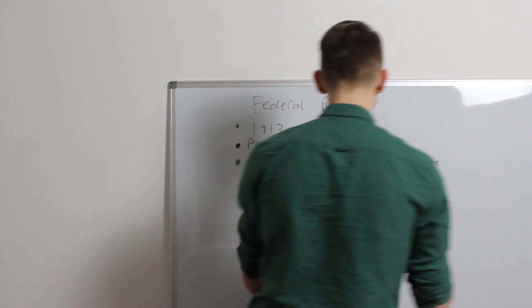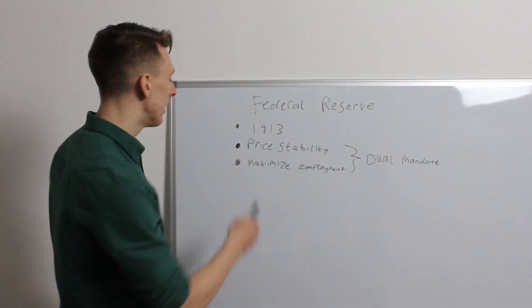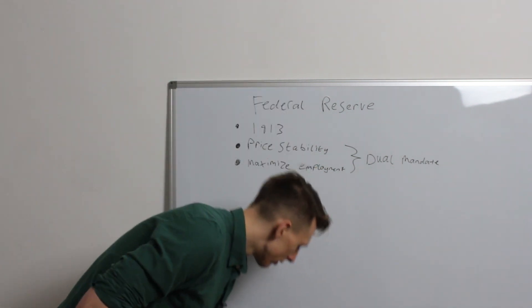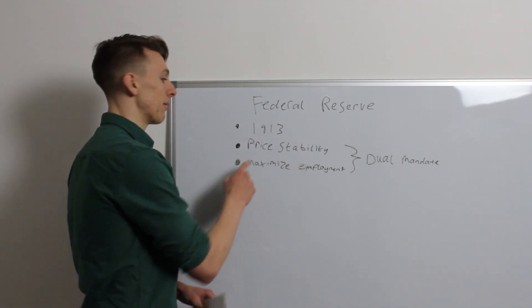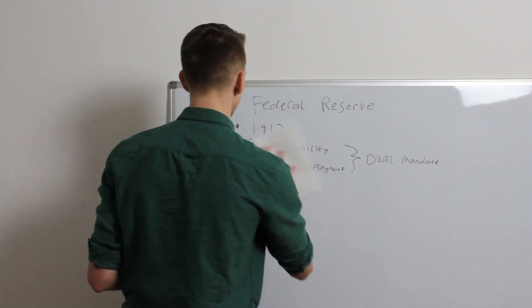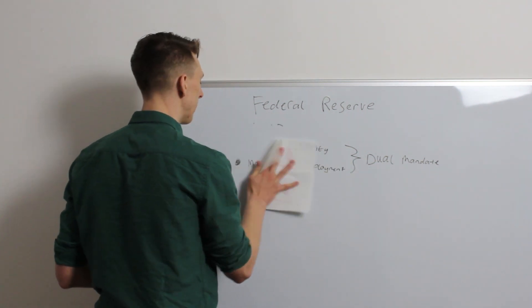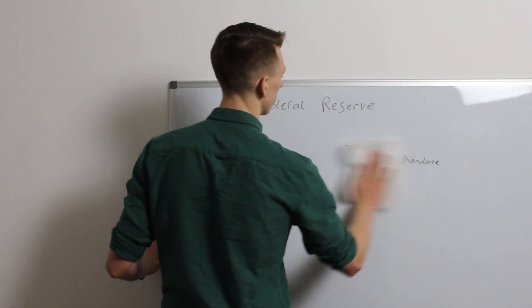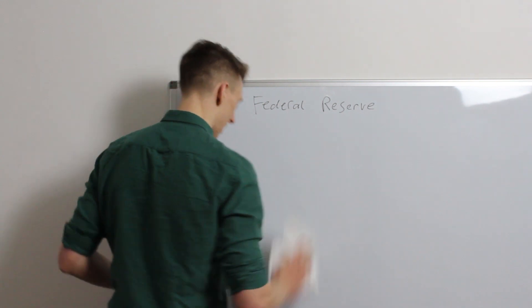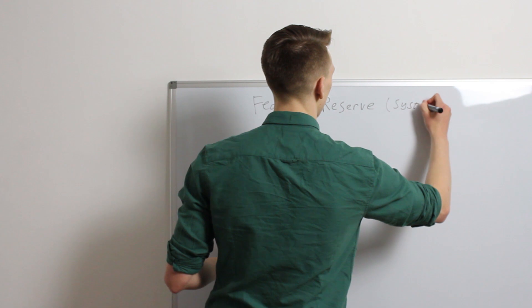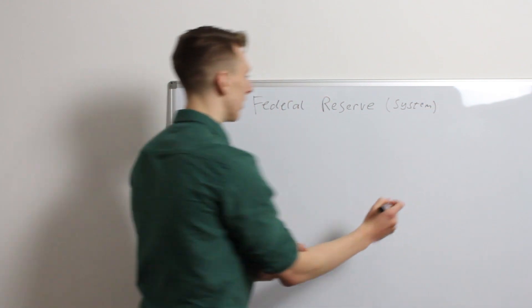So, whenever you hear anybody talking about the dual mandate, it's these two things here. So, we've talked about the aims. Let's move on to how it's structured. Federal Reserve is colloquially the shortened version of what it actually is, which is the Federal Reserve System. And how is this system set up?